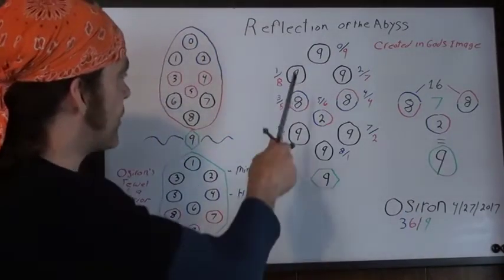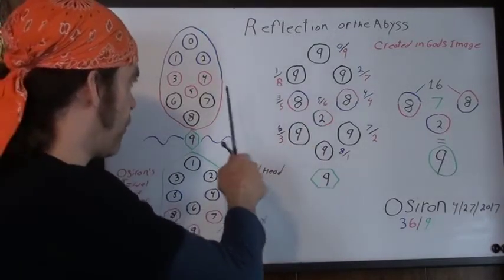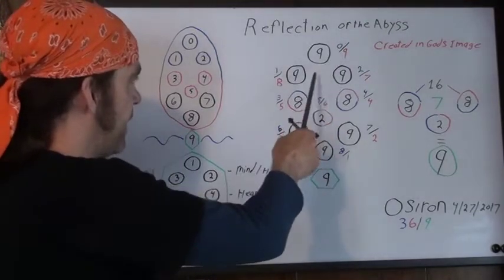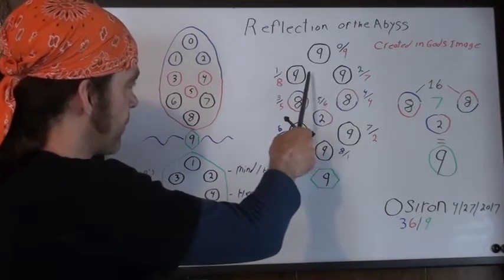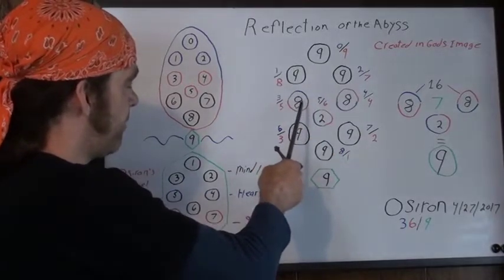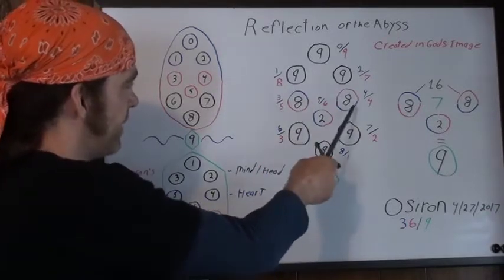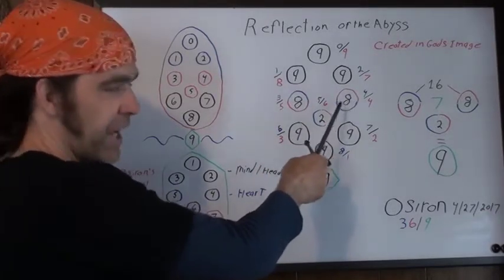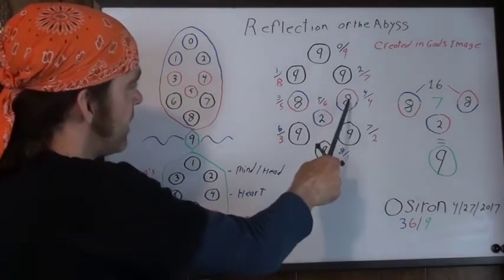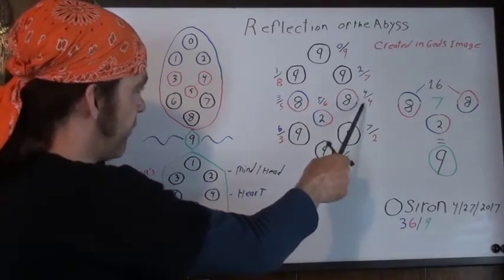And then next to this, what I have written is just the Sephiroth that are involved using both the tree and the jewel. So in Kether here, we have zero and nine. In Binah, we have one and eight. Chokmah is two and seven. Geburah is three and five. My brain, I just came from a run, so my brain is a little bit off right now. I can't even think of this Sephiroth. But whatever it is, it's four and four.